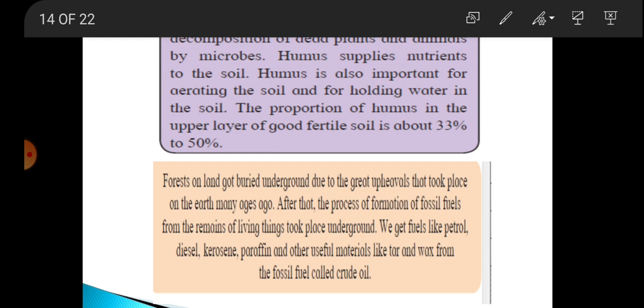If that much is the amount of humus in the soil, the soil is said to be fertile. So fertile soil is very necessary and it contains humus. So how is that soil formed? Very important question.